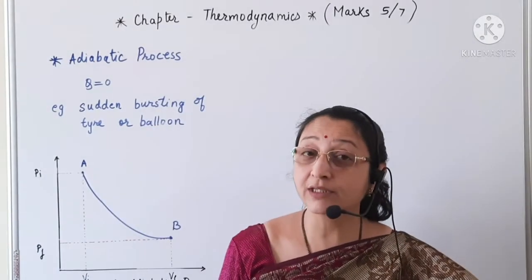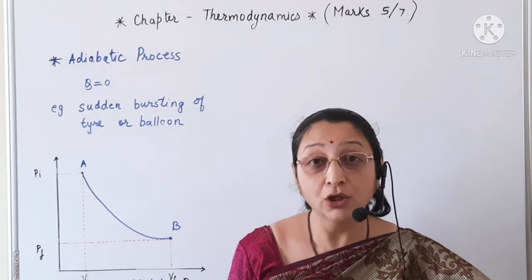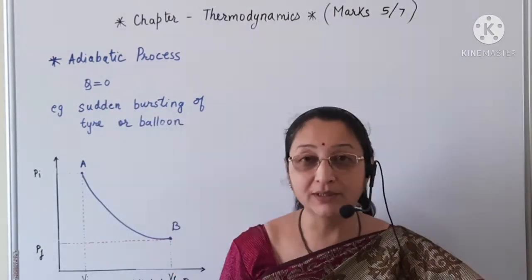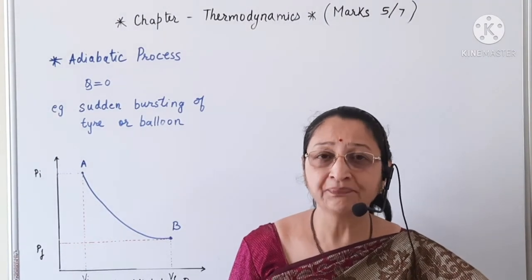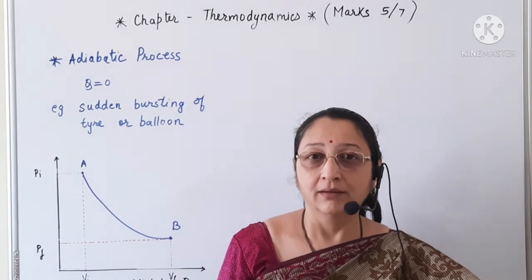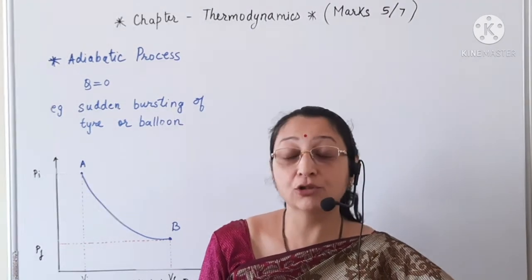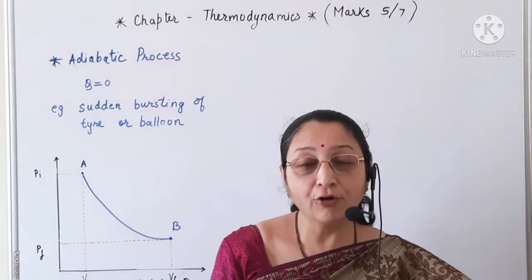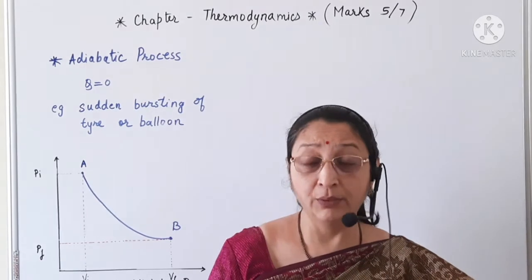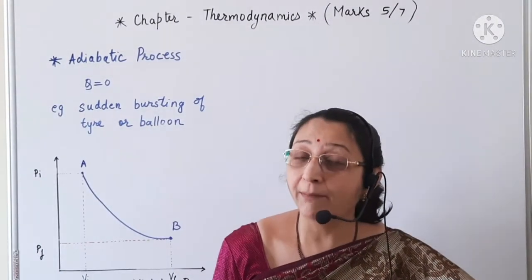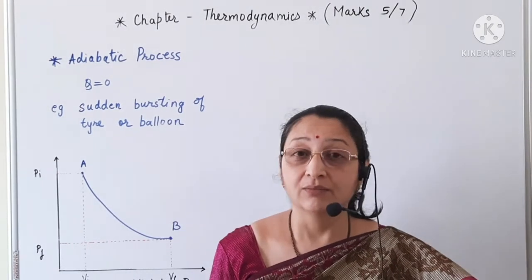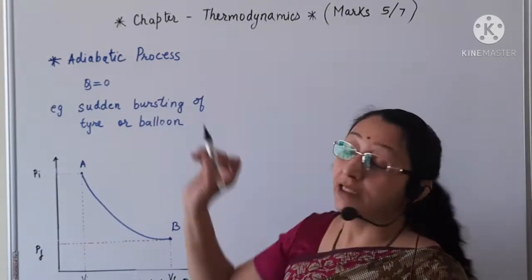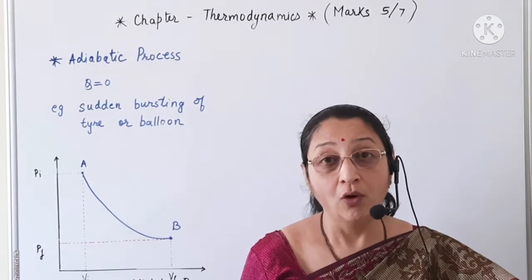The adiabatic process is a process where there is no transfer of heat to the surroundings or from the surroundings to the system. So we know that Q is equal to zero in this process. The system is insulated from the surroundings, so the exchange of heat does not take place — either because the system is insulated, or because some change is carried out rapidly so that there is no time for the exchange of heat with the surroundings.